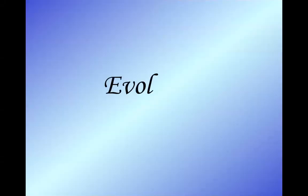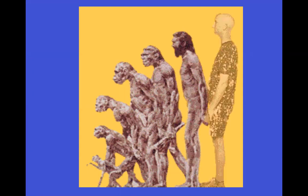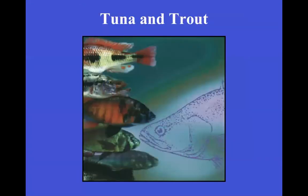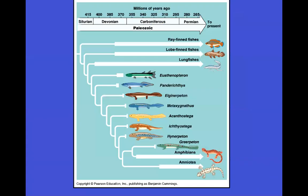Today's topic is going to be about evolution and how all of Earth's inhabitants are related. That's easy to understand if we're comparing something like a tuna to a trout, because obviously they both had fish-like ancestors. But supposing we compare something like a tuna, a human, and a frog.